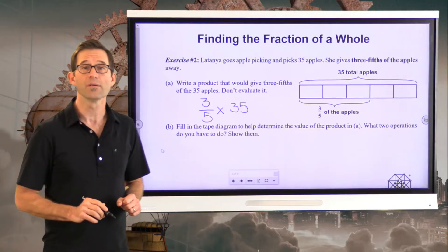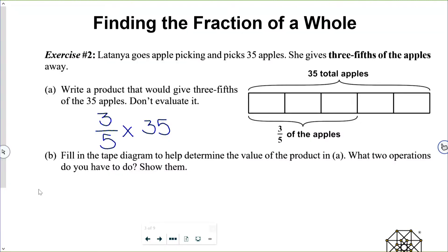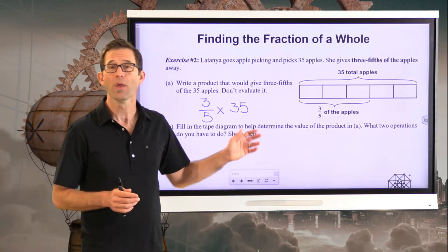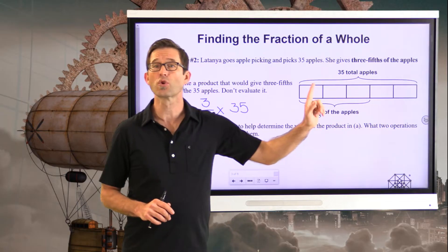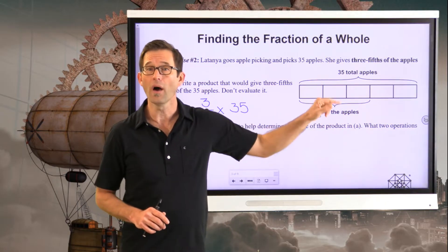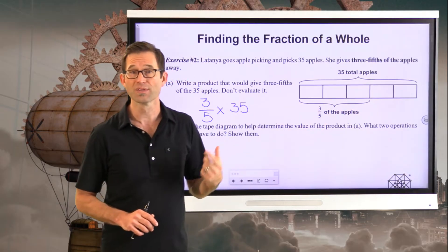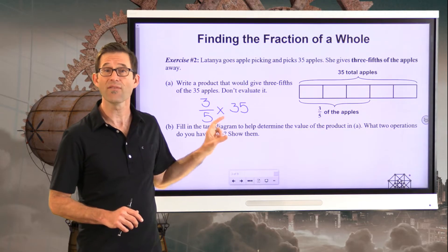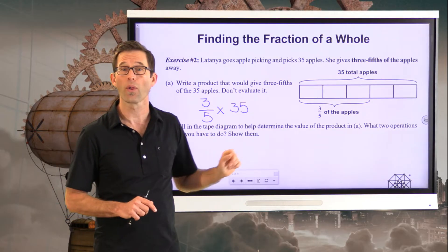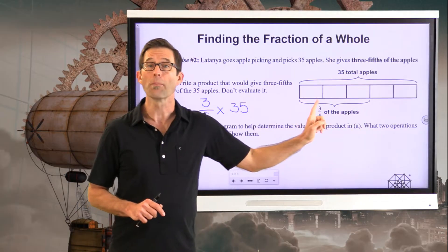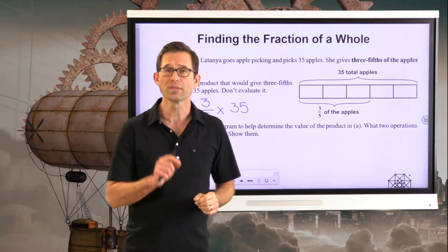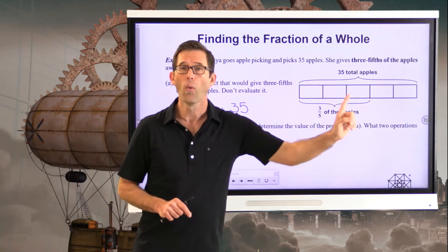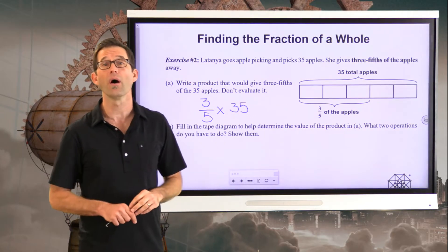Letter B says fill in the tape diagram to help determine the value of the product in A. The entire length of the tape diagram represents the 35 apples, and I've broken it up into five equal sections because Latanya is giving away three-fifths of the total apples. These three boxes represent the three out of five that she's going to give away. Pause the video and see if you can figure out what those three-fifths represent in terms of the number of apples.